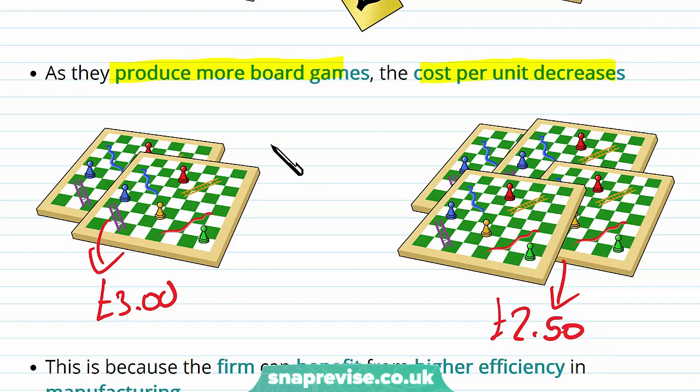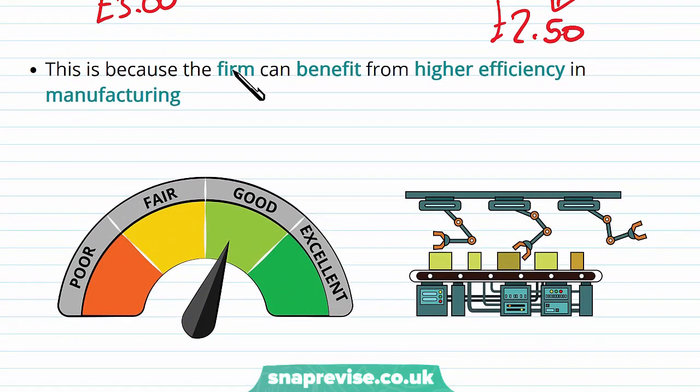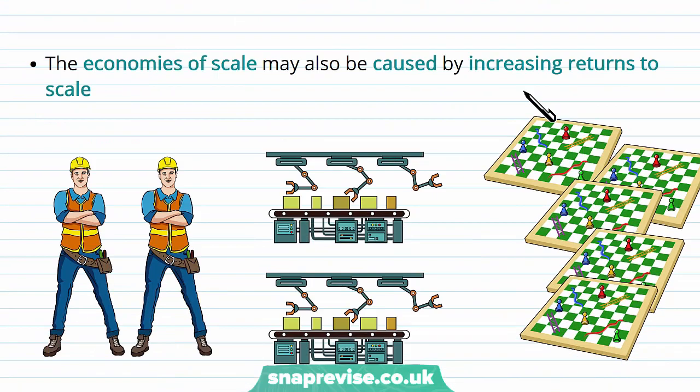The relationship we're seeing right now is that when output increases, we are seeing a fall in the cost per unit. And this is because a firm can benefit from higher efficiency in its manufacturing operations. And the way we can see this is by thinking of economies of scale as a result of increasing returns to scale.